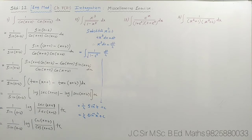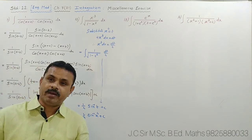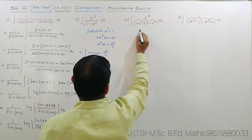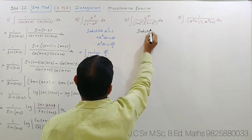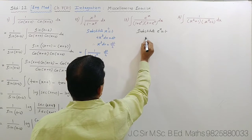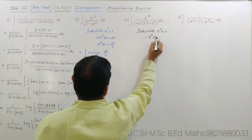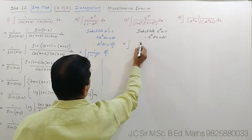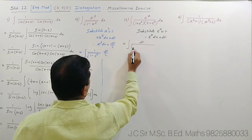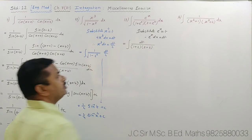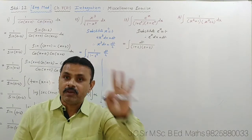Question number 14 is also a good sum. Here, eˣ is present in the numerator as well. So substitution can be made — let eˣ = t. By differentiating, eˣ dx = dt. Putting all the values: ∫ eˣ dx / ((1+eˣ)(2+eˣ)) becomes ∫ dt / ((1+t)(2+t)).